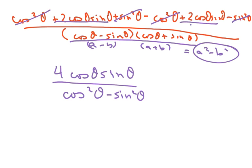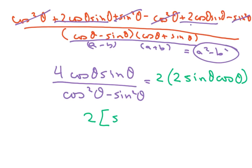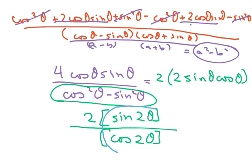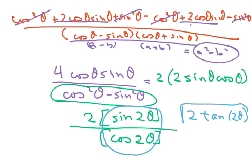Now I'm going to factor out a two in the numerator because I want to use my double angles. I know that I'm going to flip the sine and the cosine because this is sine of two theta, so this is two times sine of two theta. In the denominator, this is your double angle for cosine of two theta. Sine over cosine is tangent, so we have two tan of two theta, which is our desired result.